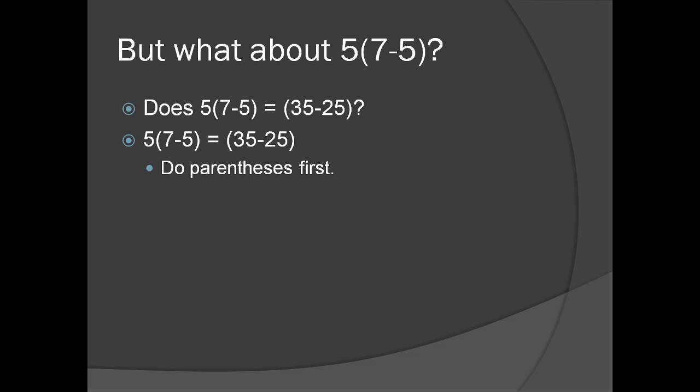Using Presh Talwalkar's method of PEMDAS, we can see they are indeed equal. First, we solve what's in the parentheses, and we get 5(2)=10. Next, we treat 5(2) as 5×2, which gives us 10. So we have 10=10. Yes, we have established that 5(7-5) does in fact equal (35-25).